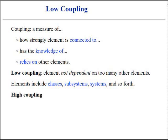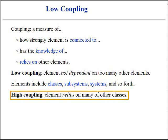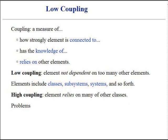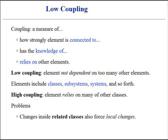A class with high or strong coupling relies on many other classes. Such classes may be undesirable. They suffer from the following problems: changes inside related classes also force local changes; classes with strong internal connections are harder to understand in isolation; and such classes are also harder to reuse, because they require the presence of additional classes on which they are dependent.